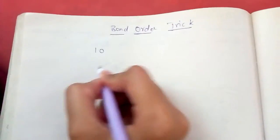For example, first of 10, 11, 12, 13, 14, 15, 16, 17, and 18. You can write 10 to 18.